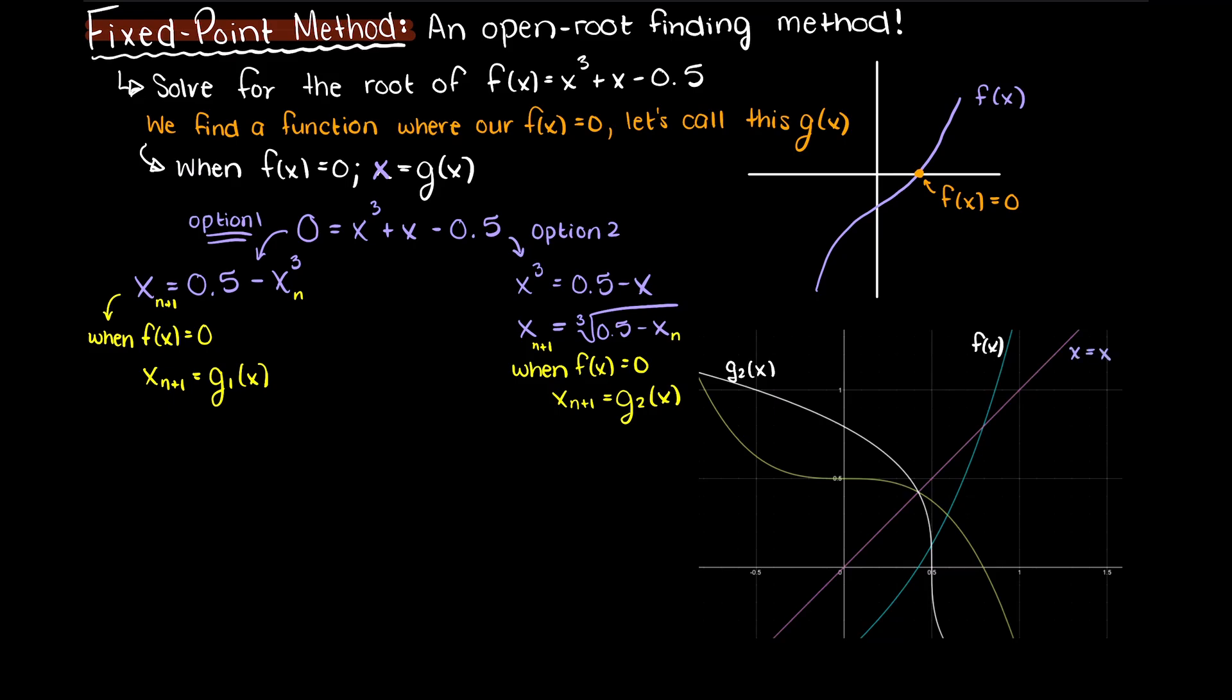As you can see, both of these intersect with a point directly above our root of interest, that is our fixed point, hence the name of this method. This is the point where x is going to equal g.